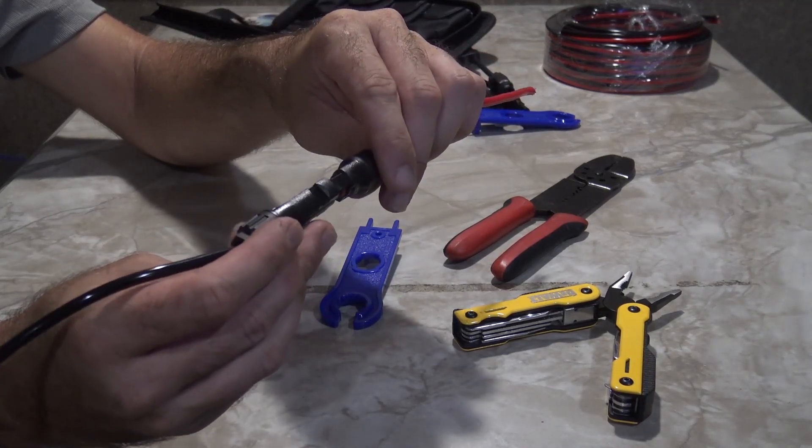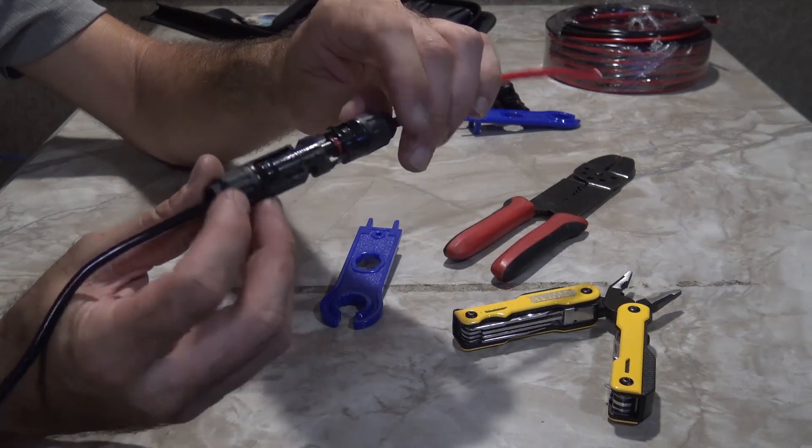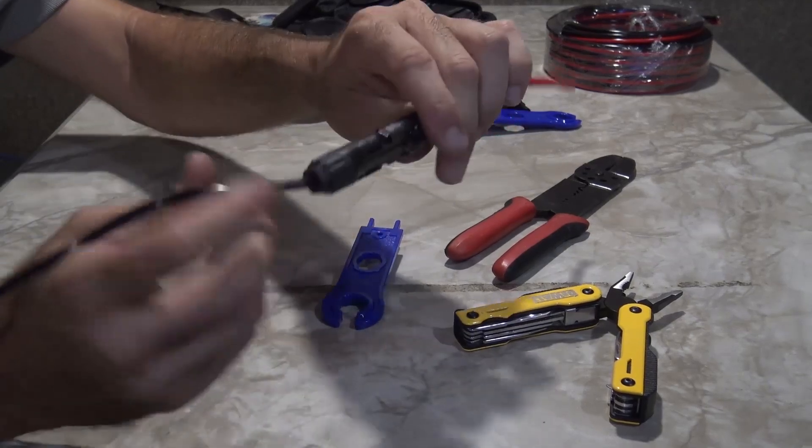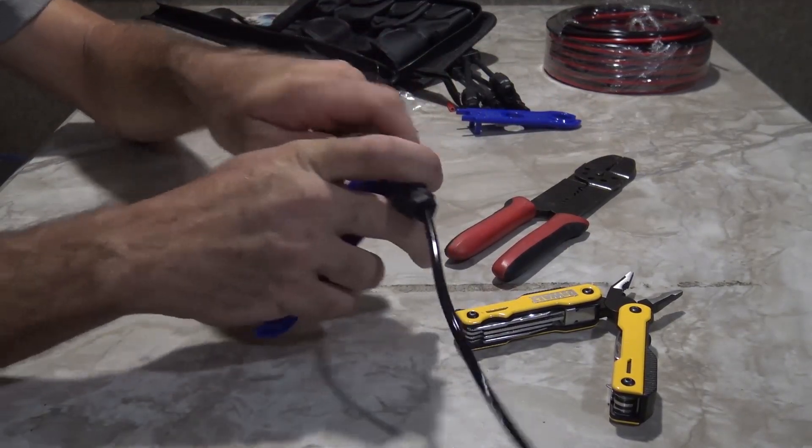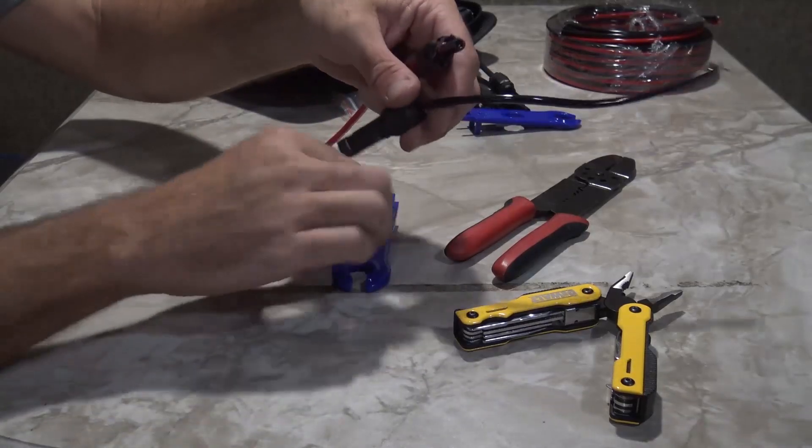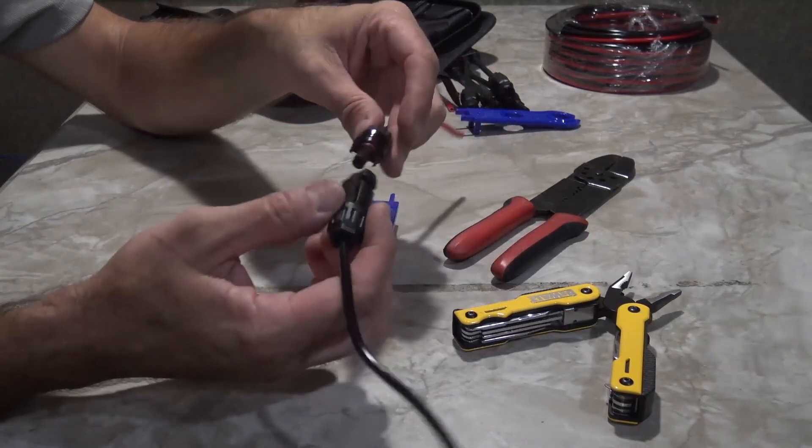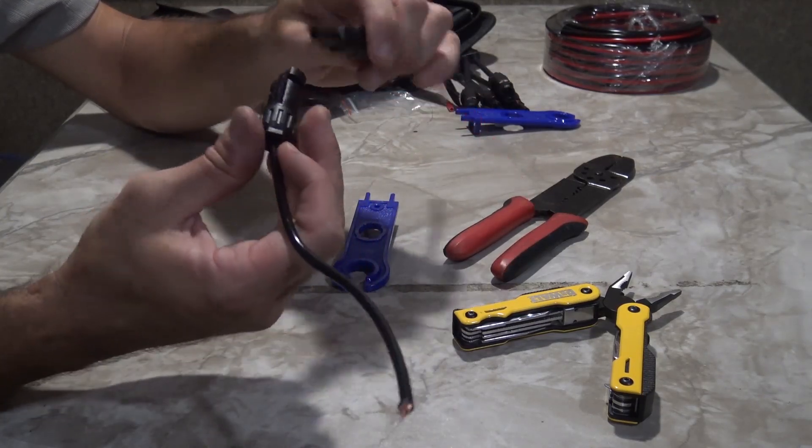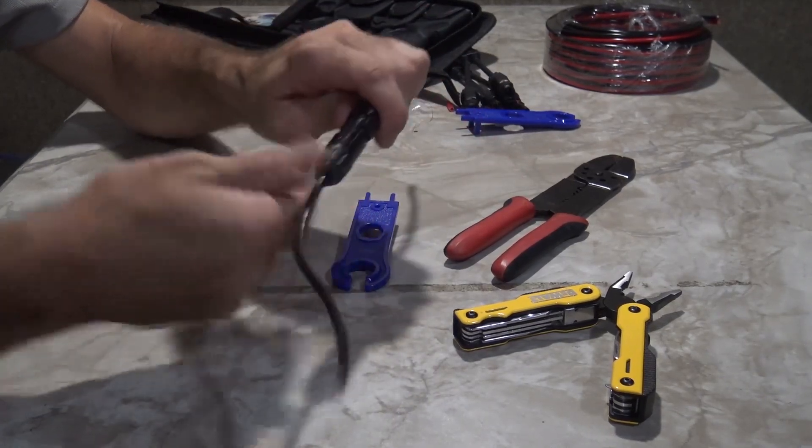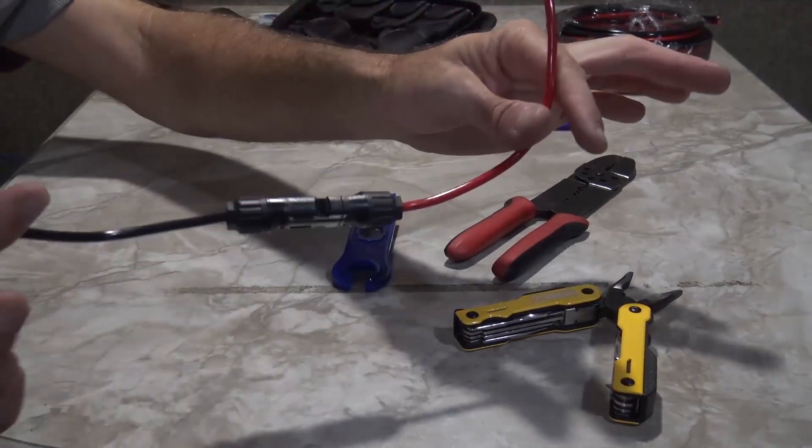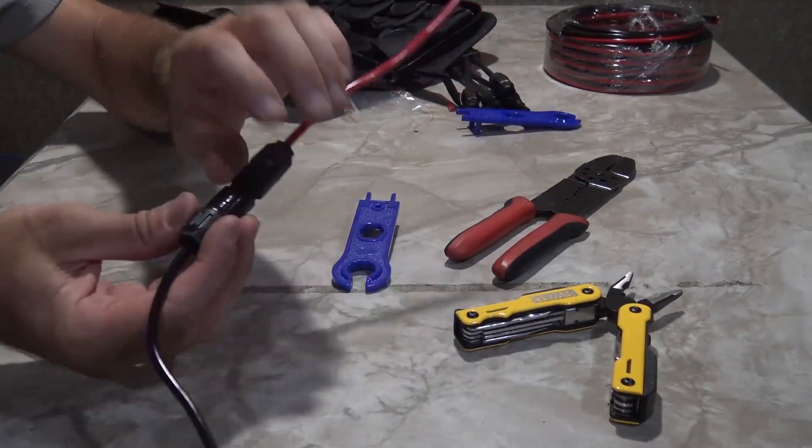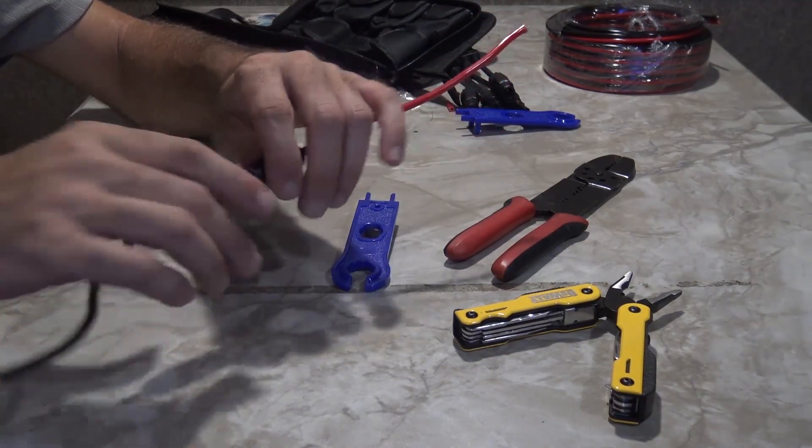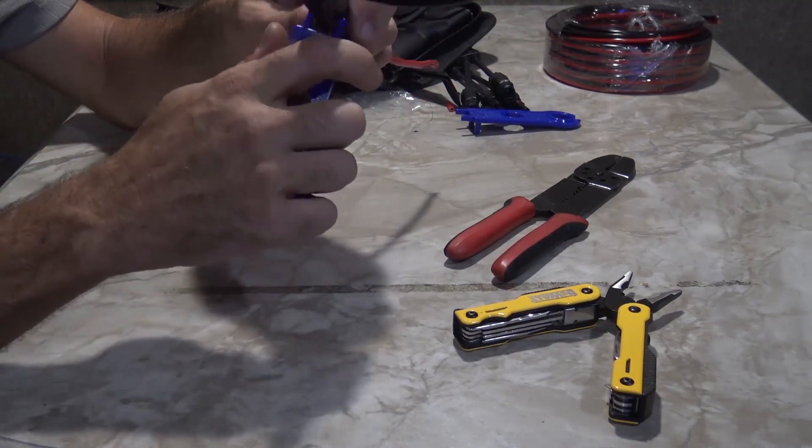So MC4 connectors, waterproof, weatherproof for a long time, very standard in solar panels. Having the right tools to do those makes it a hell of a lot easier. It's that fast, there's no butt splices, there's no soldering, there's no loose connections when you do this right like this. You could always put these together and then use an ohm meter. Put an ohm meter on and make sure their continuity is there.